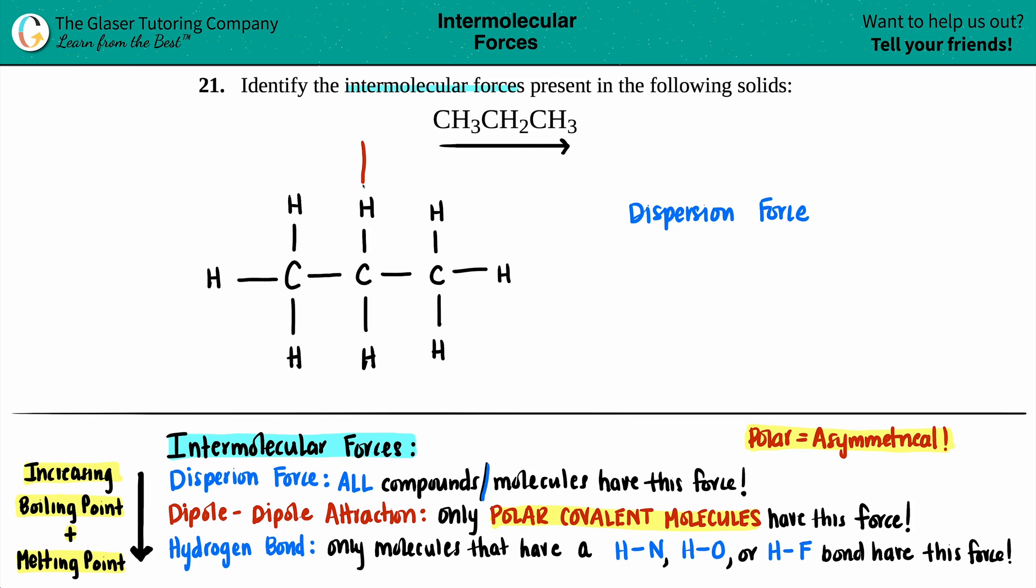So if I draw a line down the middle part of the molecule—and that's totally legal, you can draw lines down atoms—I have a CH3 on the left and I have a CH3 on the right. That's completely identical, no difference about that. So this would not be polar. The opposite to polar is non-polar. So since this is a non-polar molecule, you do not have dipole-dipole attractions here.